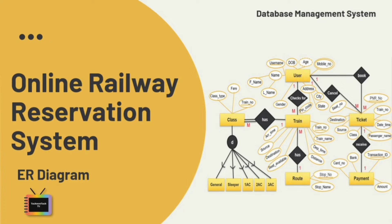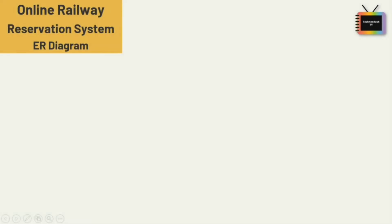An ER diagram for an online railway reservation system is a visual presentation of entities and relationships of online railway reservation software database. The railway network is a very vast system to be handled manually, and its computerization will prove to be of great help to both employees and passengers.